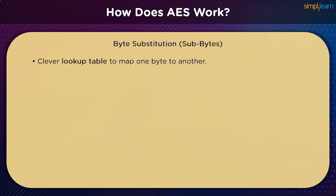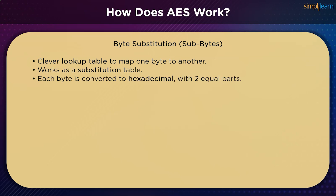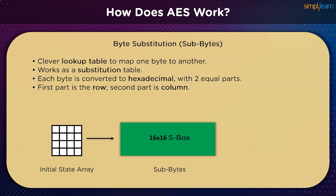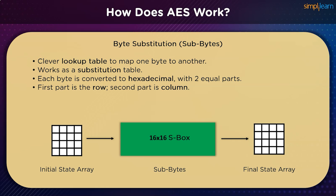For byte substitution, we leverage an S-box — a substitution box — to randomly switch data among each element. Every single byte is converted into a hexadecimal value having two parts: the first part denotes the row value and the second part denotes the column value. The entire state array is passed through the S-box to create a brand new state array. The 16 input bytes are replaced by looking up a fixed table given in the design, giving a matrix with four rows and four columns.